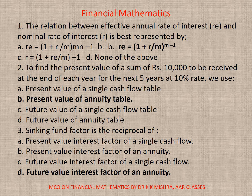Question 2: To find the present value of a sum of rupees 10,000 to be received at the end of each year for the next 5 years at 10% rate, the correct option is B — present value of annuity table.